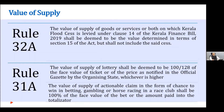For Kerala Flood Cess, they introduced Rule 32A, which says the value determined under Section 15 will be the basis for payment of cess but shall not include the said cess. Similarly, for specific transactions like supply of lottery or betting, they have indicated what the value will be for the purpose of payment of GST, to reduce controversies in these transactions.